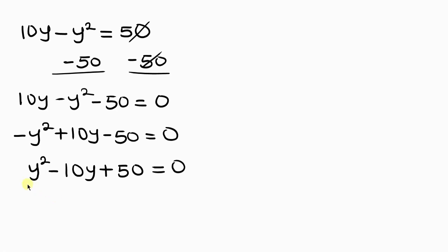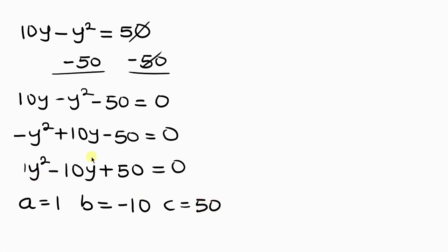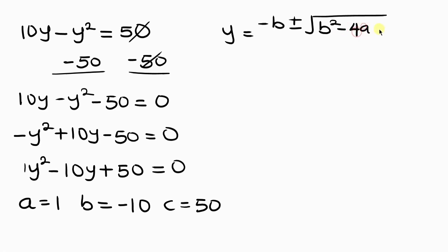Now let's solve this quadratic equation using the quadratic formula. We need to identify a, b, and c. Our a is the coefficient of y squared, which is 1. Our b is the coefficient of y, which is negative 10. And our c is the constant term, which is 50. Since we're looking for y, the quadratic formula is: y equals negative b plus or minus the square root of b squared minus 4ac, all over 2a.